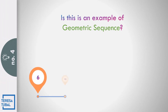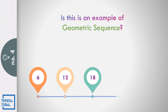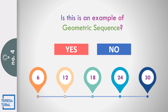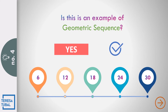Is this an example of the geometric sequence 6, 12, 18, 24, and 30? Yes or no? Correct! The answer is no because there is no common ratio from first up to the last term.